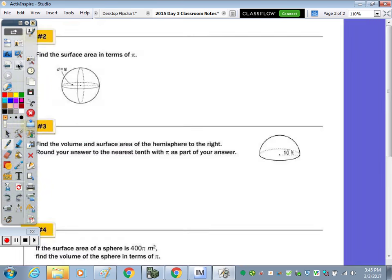Number two, find the surface area in terms of pi. So the surface area formula is 4πr². In this picture they give us the diameter, and we now have a radius of four. So it's going to be 4π times 4², which is 16. 16 times 4 gives us a total surface area of 64π. We're not given a unit, so let's just write units squared.